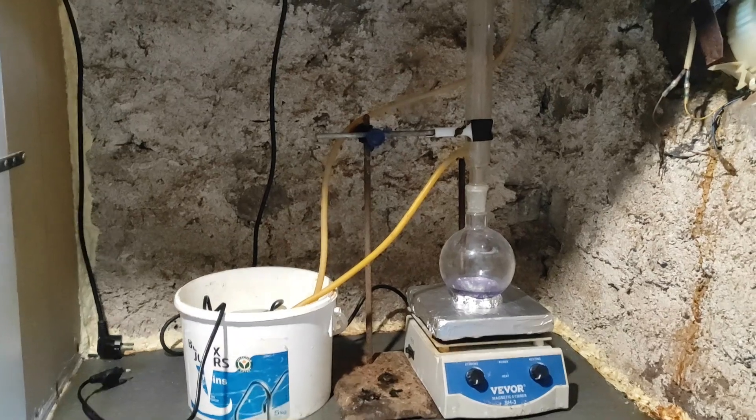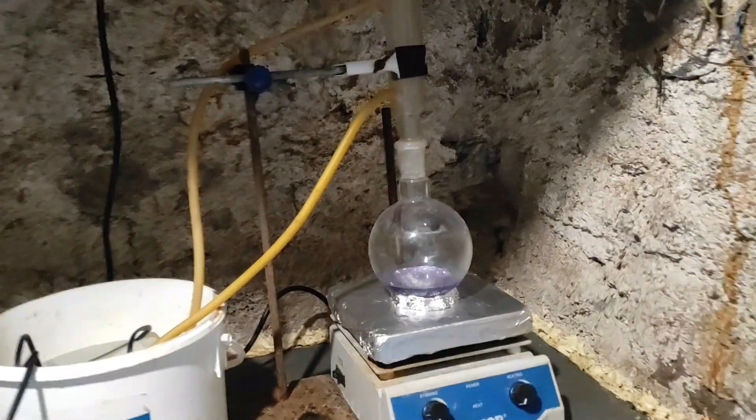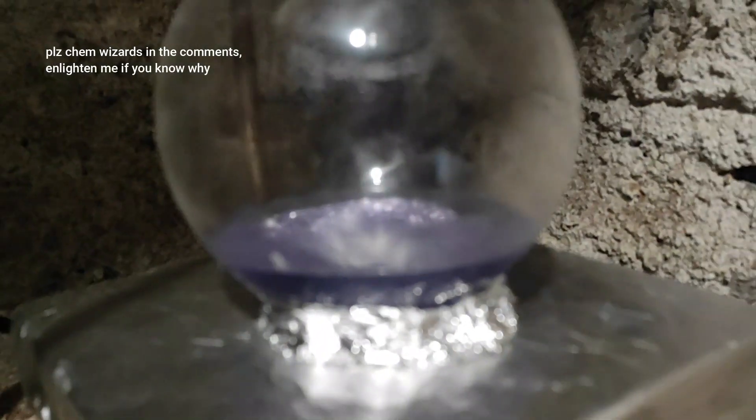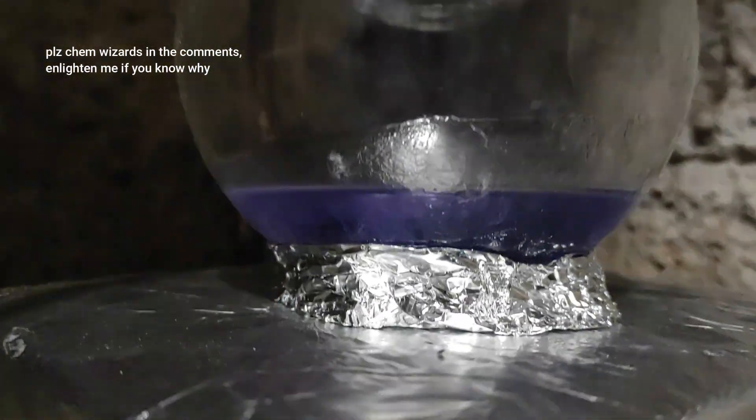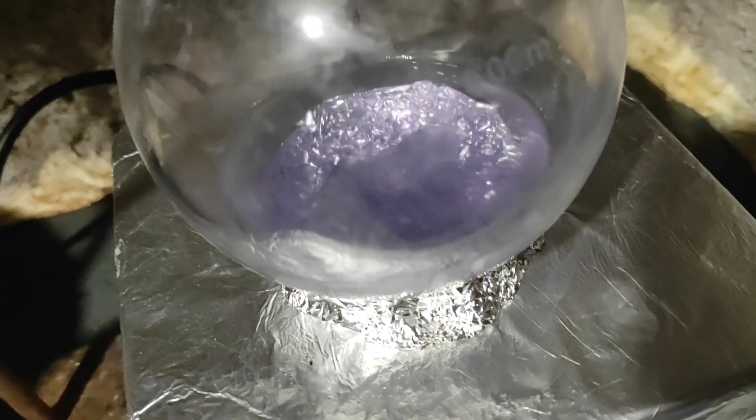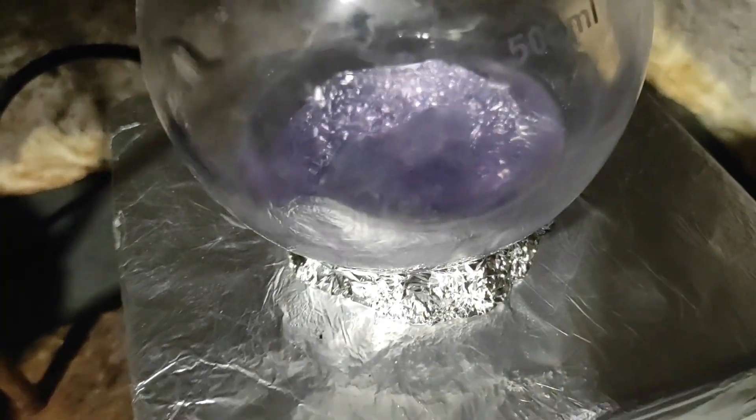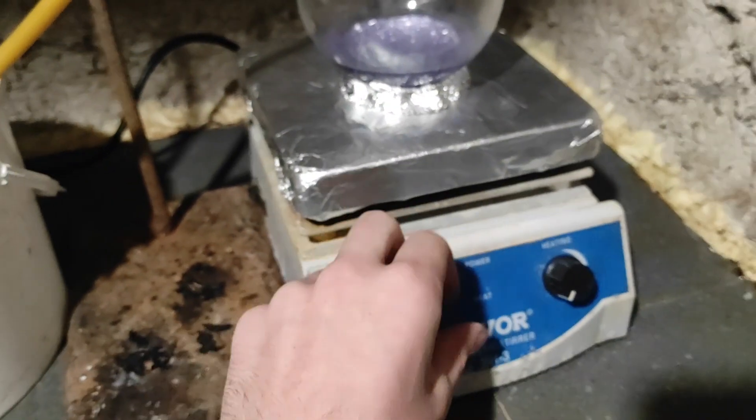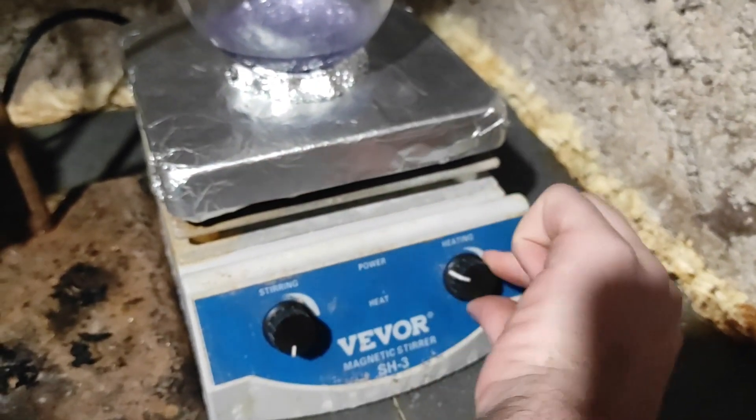When all the acid has been added the flask has now turned this weird blue purple color for some reason. Anyway I added a condenser on top of the flask to make a reflux apparatus. This will allow for the methanol solution to be boiling constantly without losing any methanol because it gets recondensed in the tube and drops in the flask again.